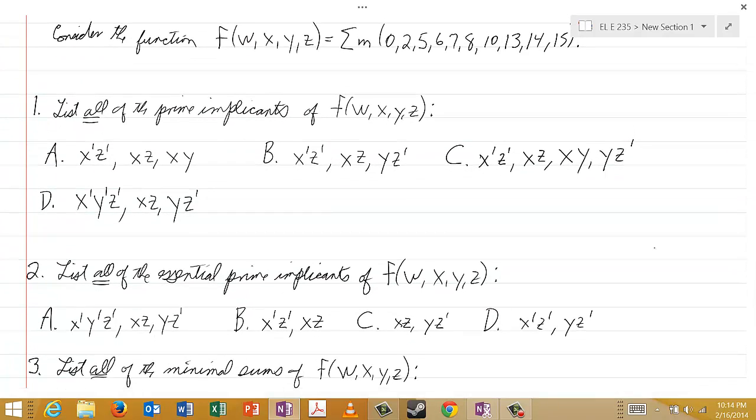Number 1: list all of the prime implicants of this function. The choices are: A) x'z', xz, and xy; B) x'z', xz, and yz'; C) x'z', xz, xy, and yz'; and D) x'y'z', xz, and yz'. Which is the correct list of all the prime implicants of f?